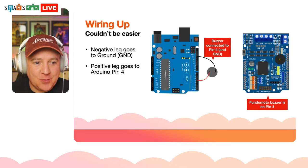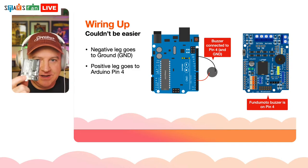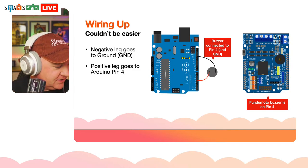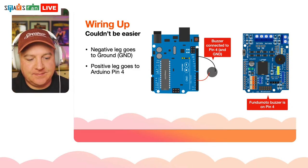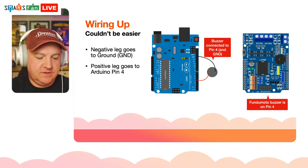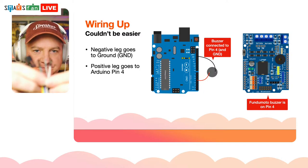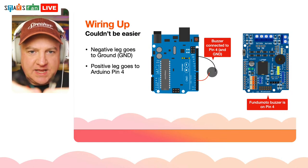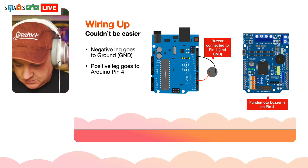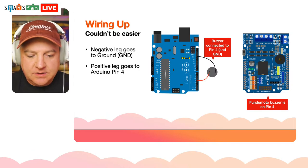Wiring up could not be simpler. I've got an Arduino here, and I'm going to pull off two dupont cables. There goes the buzzer — I'll just push some cables into it.